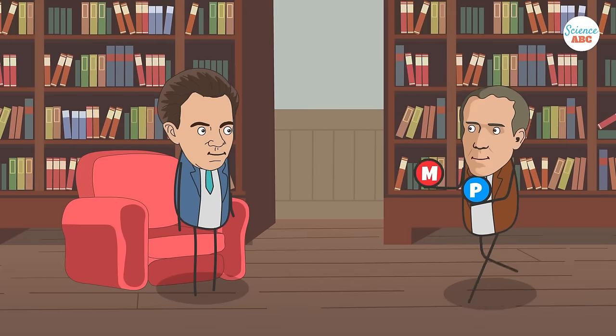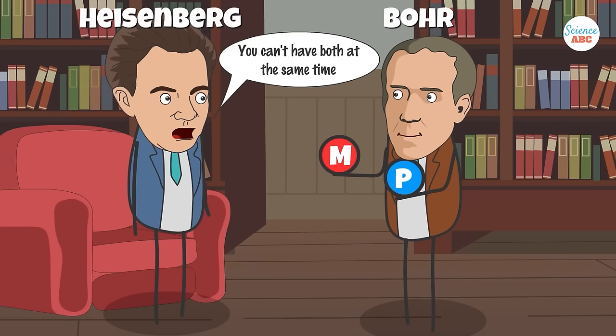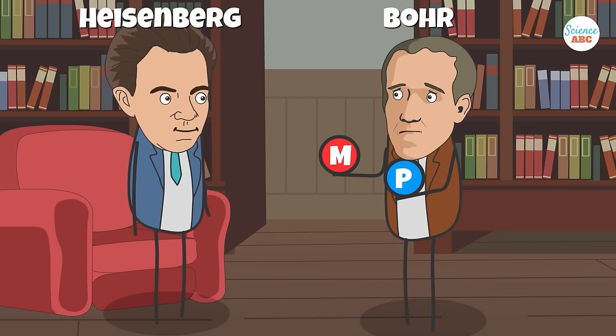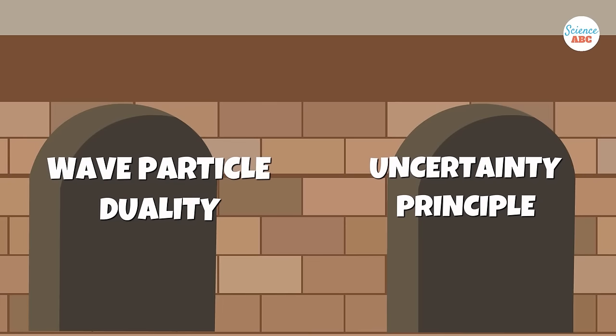According to this principle, it's impossible to know the exact position and trajectory of electrons in an atom, which means they can't exist in fixed orbits, as Bohr hypothesized.